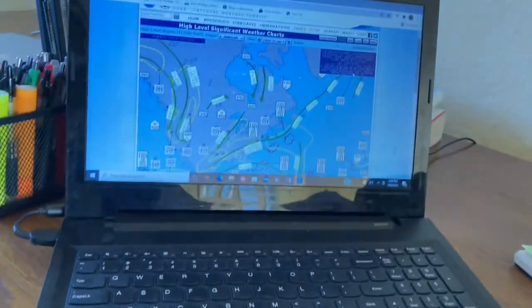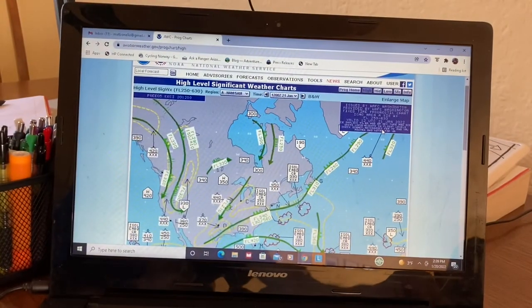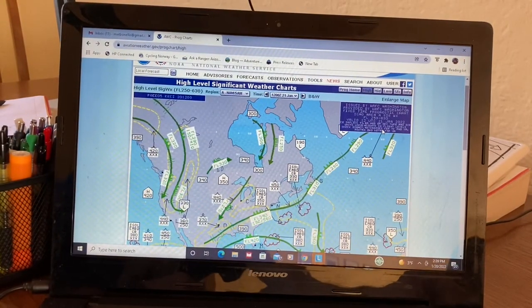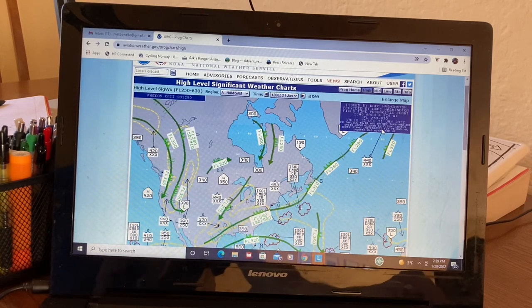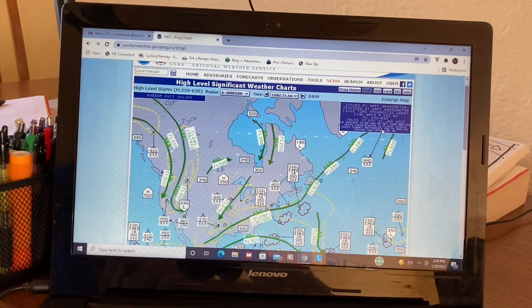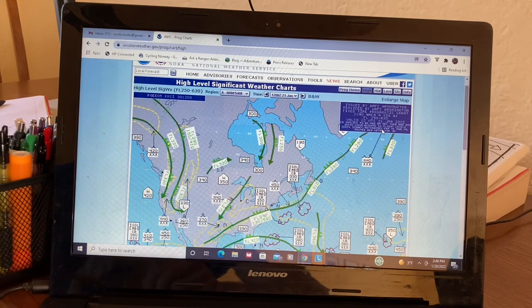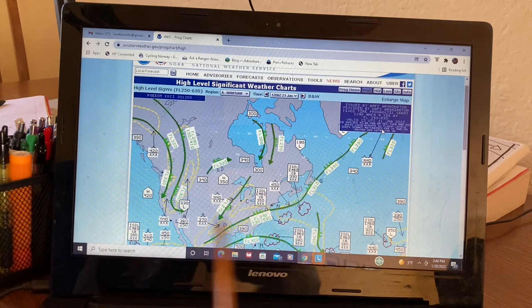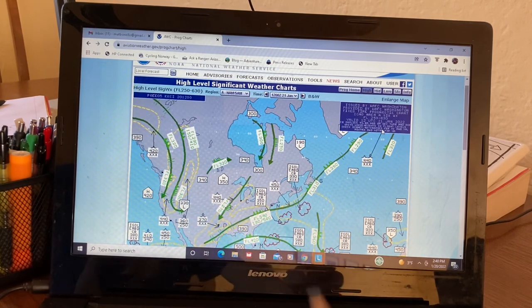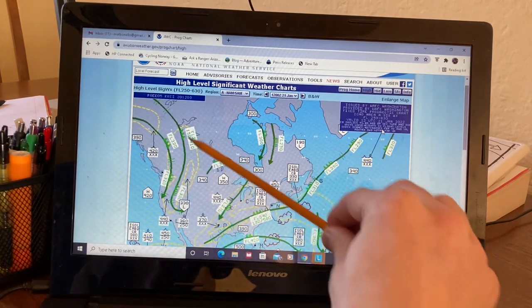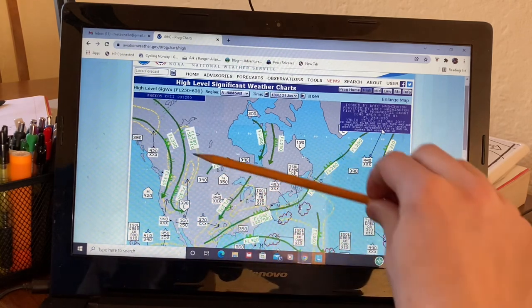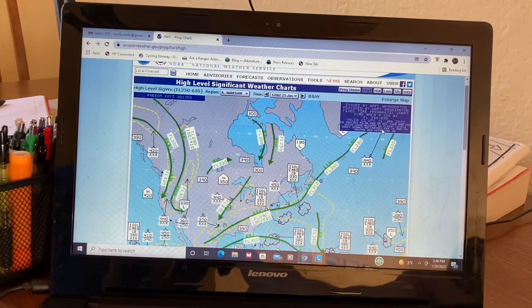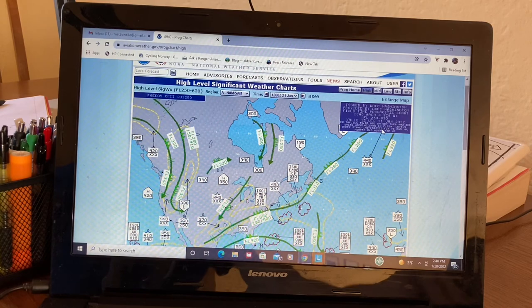And you can look at the high altitude significant weather prog chart up here, and you'll find jet streams on there. So these green arrows here are going to be the jet streams. And you can see, it varies, but pretty generally, they're going west-ish to east-ish. And they've got the altitudes posted on them, and then the strengths in the flags here. That's where you can see them.